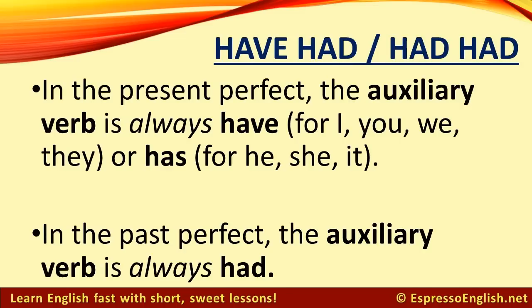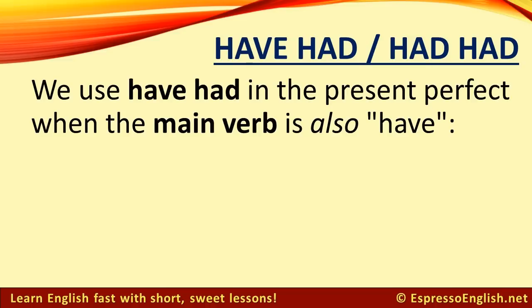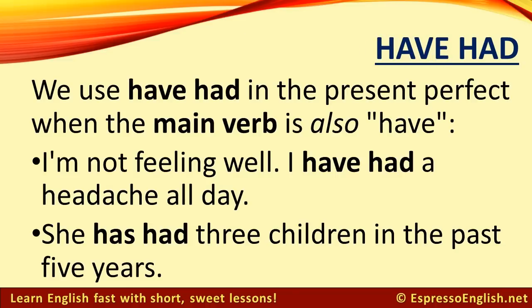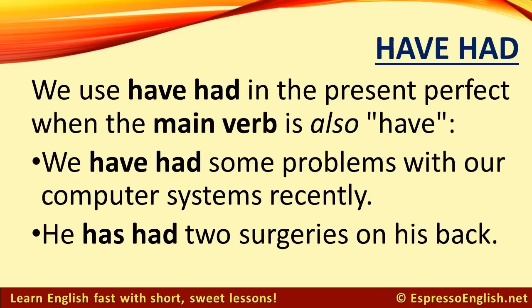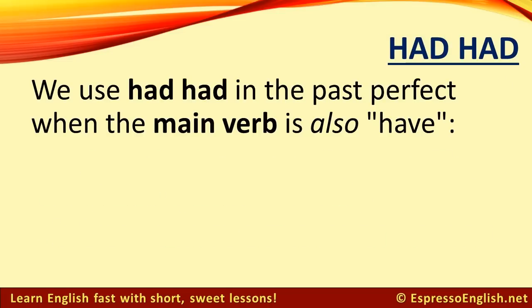In the present perfect, the auxiliary verb is always have or has. And in the past perfect, the auxiliary verb is always had. We use have had in the present perfect when the main verb is also have. And we use had had in the past perfect when the main verb is also have.